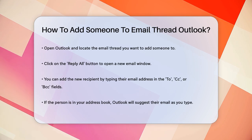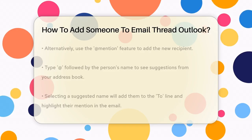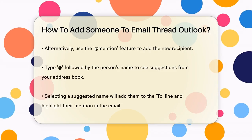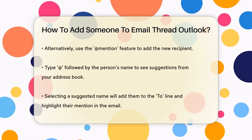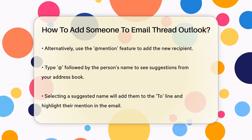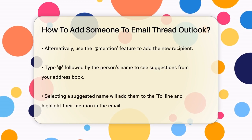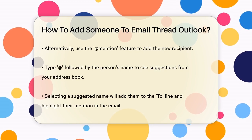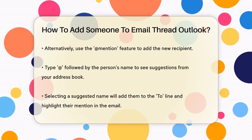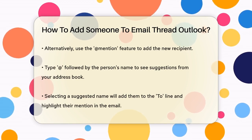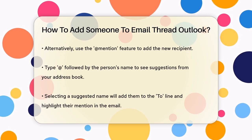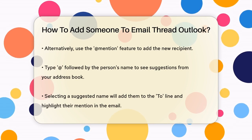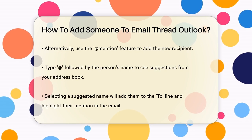Now you have a couple of ways to add this person. One method is to manually type their email address in the To, CC, or BCC field. Simply start typing their name and if they are in your address book, Outlook will suggest their email address.